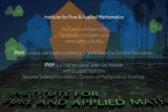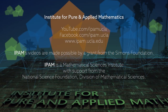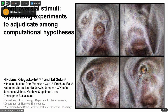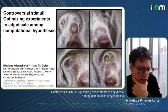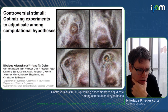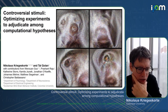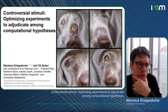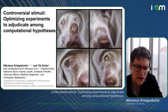My title is 'Controversial Stimuli: Optimizing Experiments to Adjudicate Among Computational Hypotheses.' This is a little different from the approaches to explainable AI you've heard about in this workshop. I want to talk about the difference between what we're discussing here and XAI as conventionally conceived.